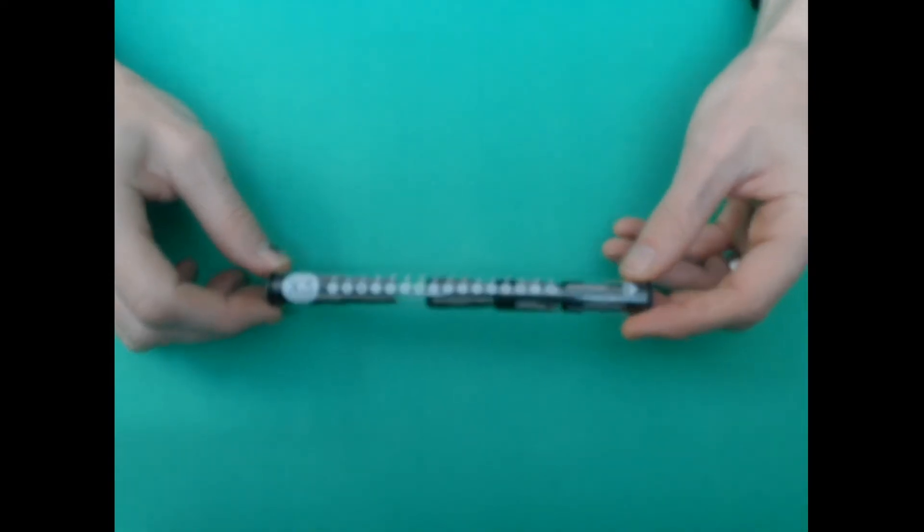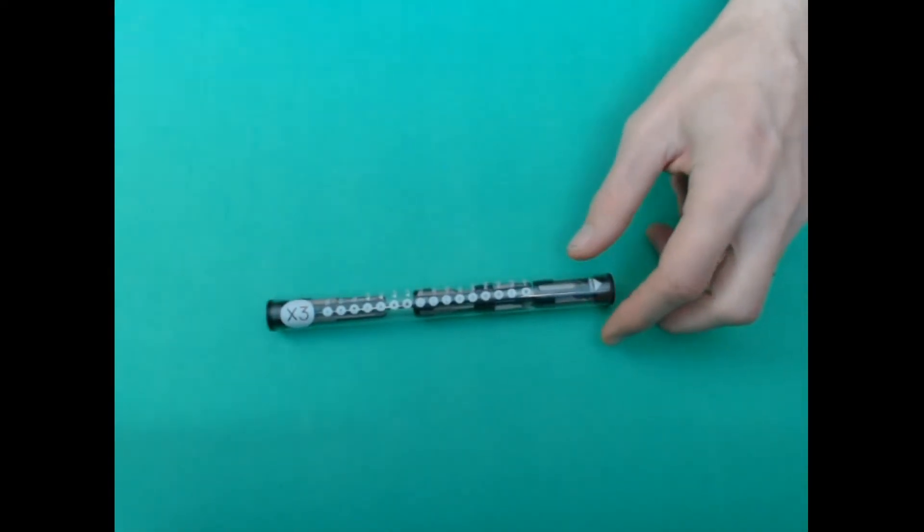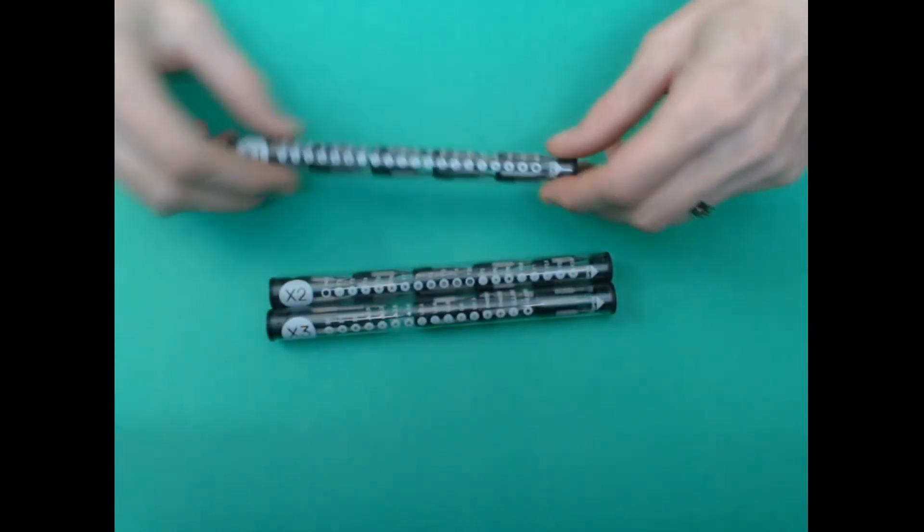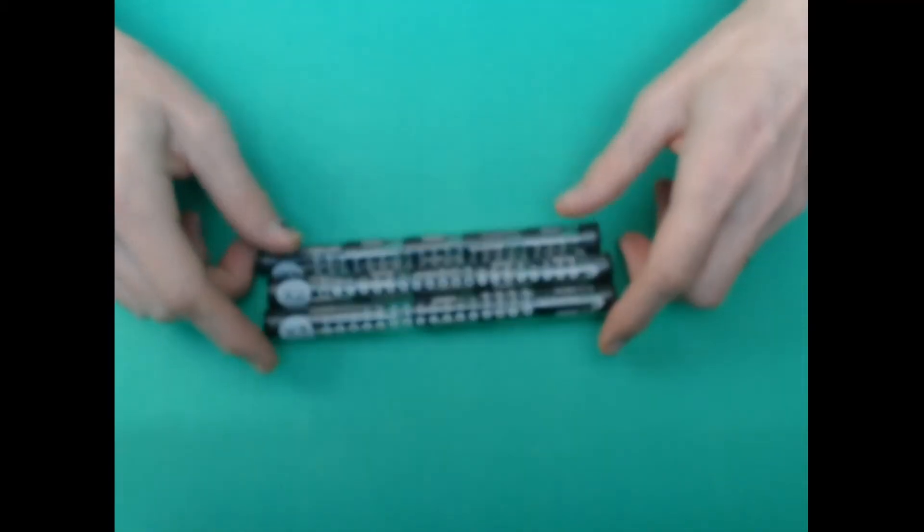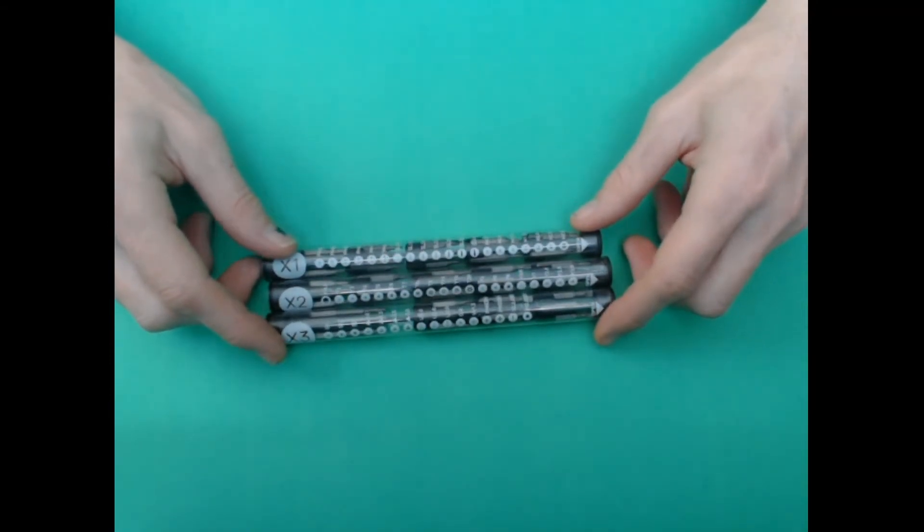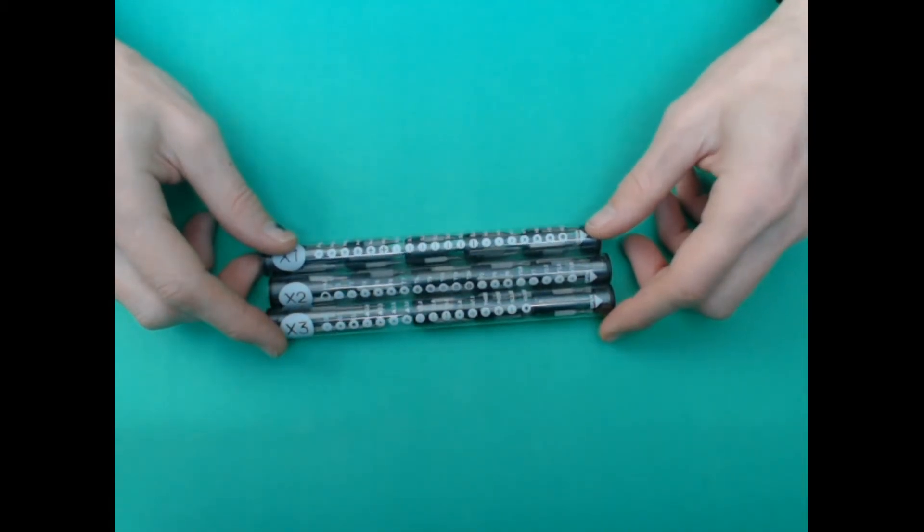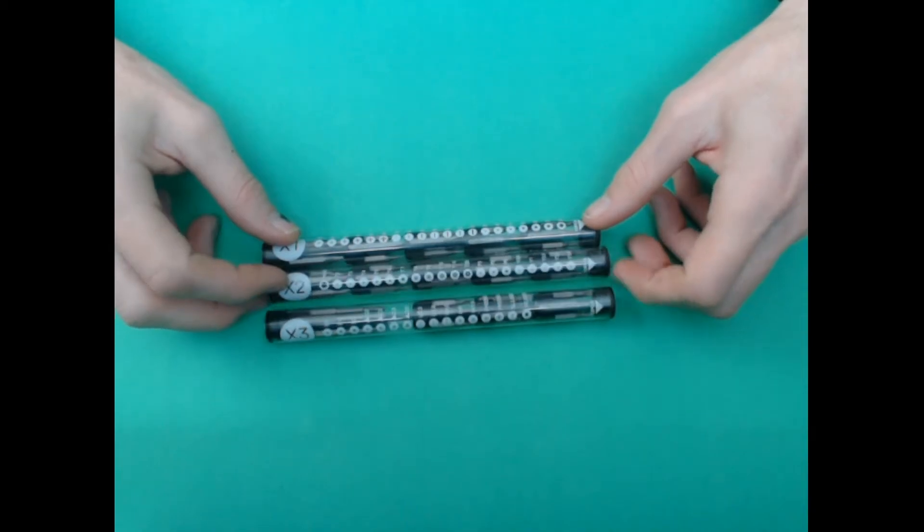It comes with a lot of bits for it, and I do mean a lot. There's three different sets of bits. You have everything from Philips down to quadruple zero up to Philips two, H bits, flatheads, and hex.